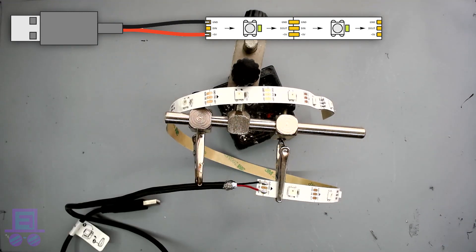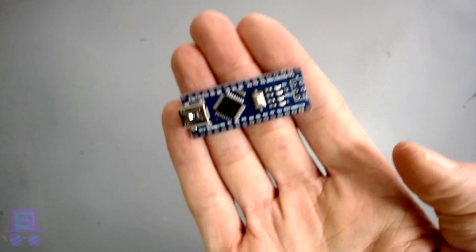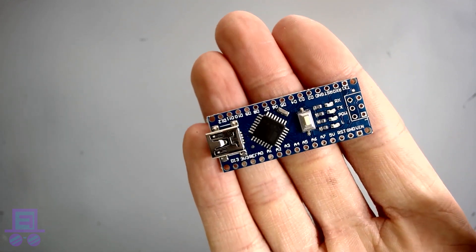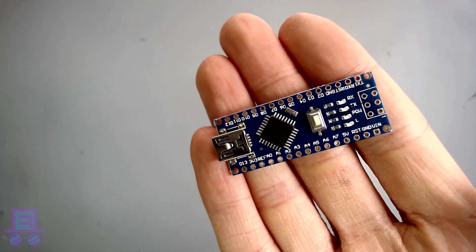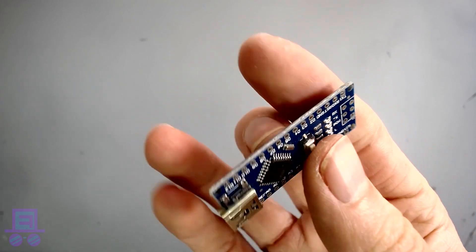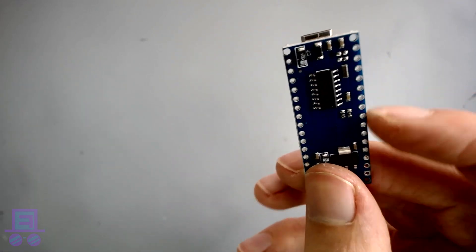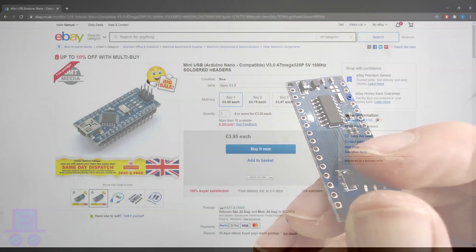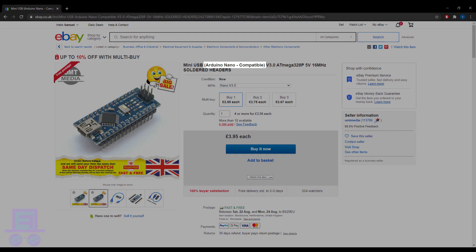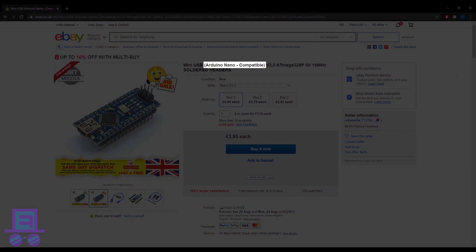Now our strip has power, we need to control it somehow. And this is where the Arduino comes in. An Arduino is like a tiny computer that we can use to control our LEDs. Personally, I use knockoff Arduinos, which can be found on sites such as eBay under terms like Arduino compatible. They do exactly the same job as the official ones at a quarter of the price.